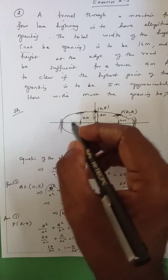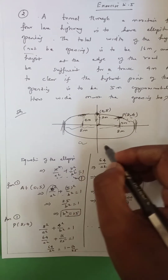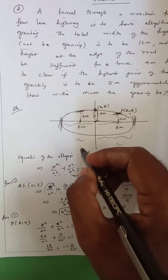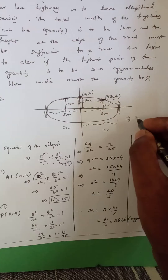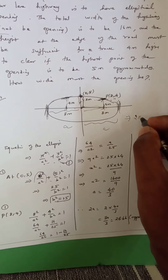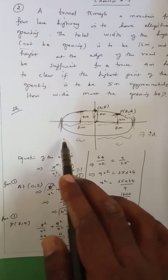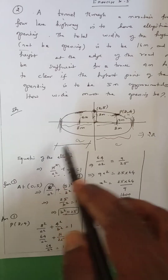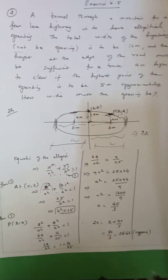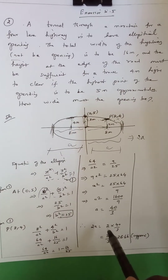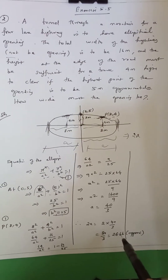The total width of the opening equals 2a, so total width equals 2 × (40/3). Final answer: 26.66 meters.